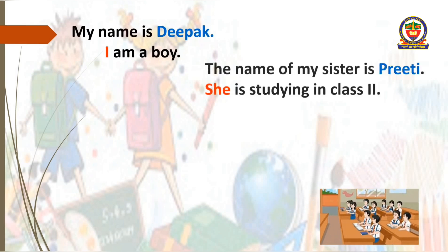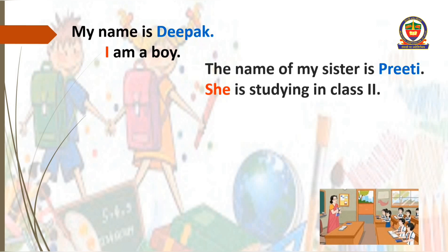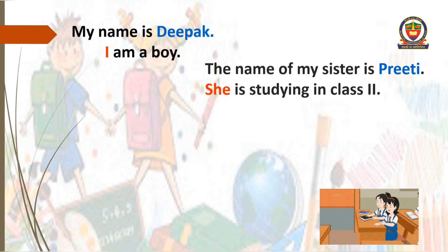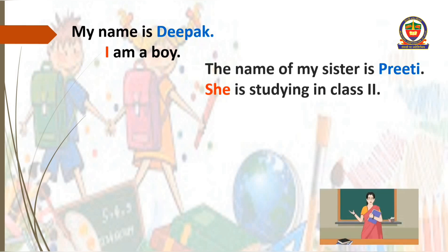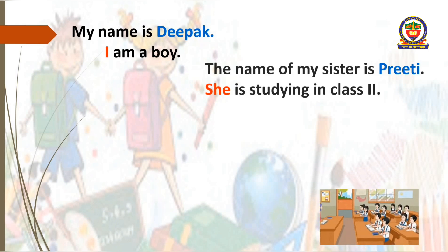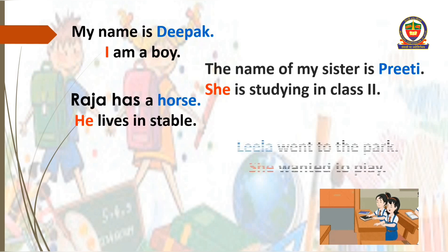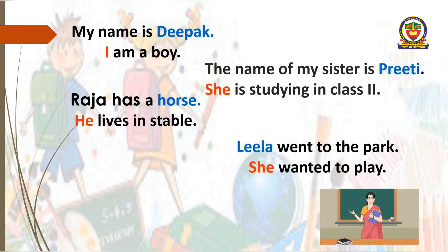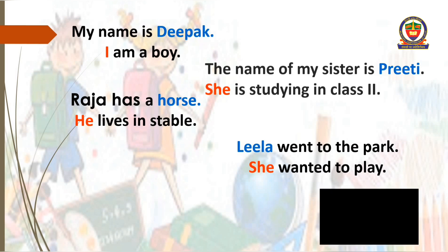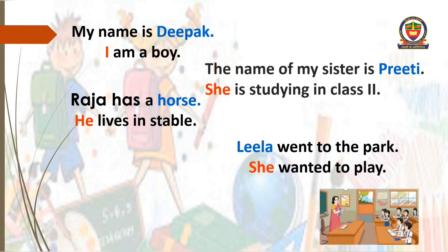Now let's see how they are used in a sentence. My name is Deepak. I am a boy. Instead of writing Deepak is a boy, we have used I. So noun is Deepak and I is a pronoun. In the next sentence, the name of my sister is Preeti. She is studying in class 2. Instead of writing Preeti is studying in class 2, we have written she is studying in class 2. So Preeti is noun and she is pronoun. Next sentence: Raja has a horse. He lives in stable. So instead of horse lives in stable, we have used he. Leela went to the park. She wanted to play. So Leela is noun and she is pronoun.